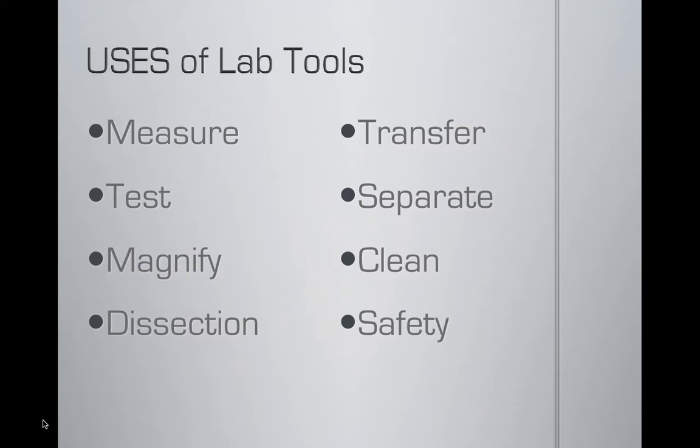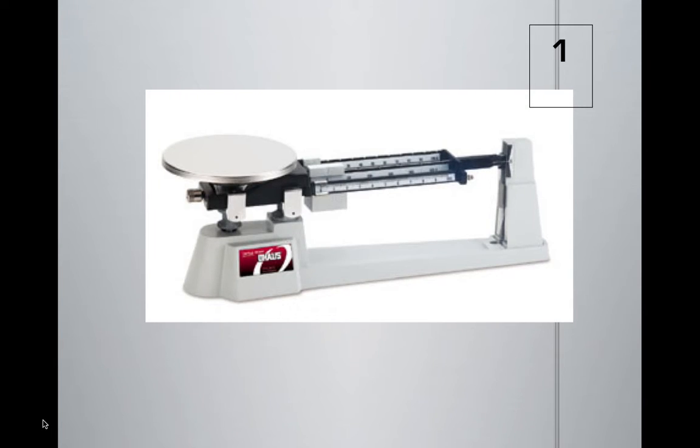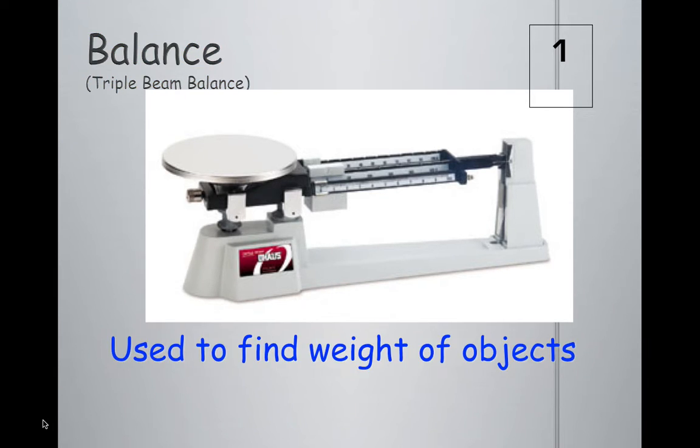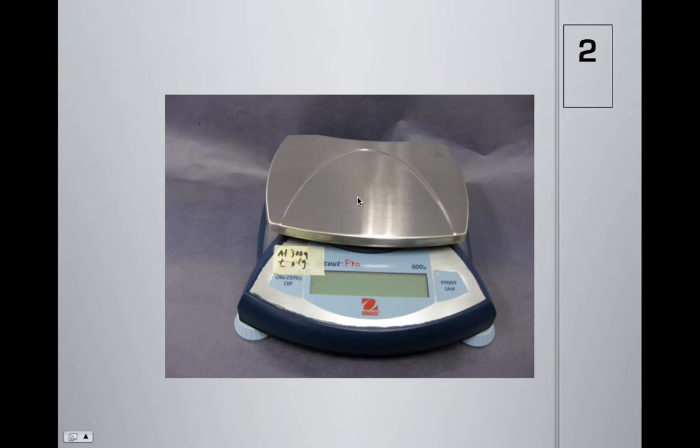Here is the first item, called a triple beam balance. This item is used to find the weight of objects. You would put the object on this plate right here and then move these sliders until everything is balanced. Then you would add up all the weight to get your final weight.